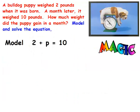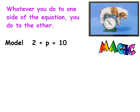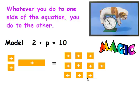Let's try it again. A bulldog puppy weighed 2 pounds when it was born. A month later, it weighed 10 pounds. How much weight did the puppy gain in a month? Model and solve the equation. Don't forget — whatever you do to one side of the equation, you do to the other. I've set up my algebra tiles: 2 plus x equals 10. My first step is to isolate the variable. I need to get rid of the 2 next to the variable. I'm going to do that by adding two negatives. But remember, whatever I do to one side of the equation, I have to do to the other.